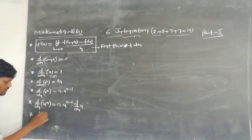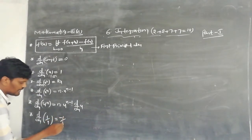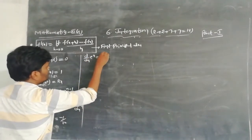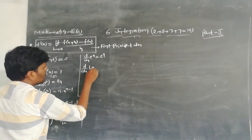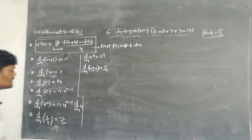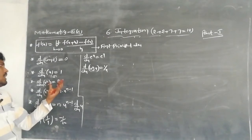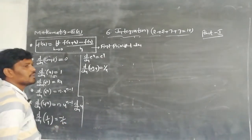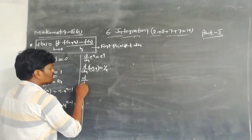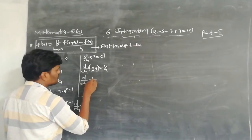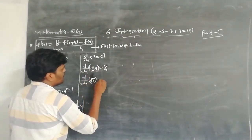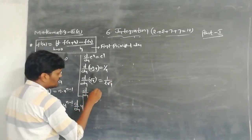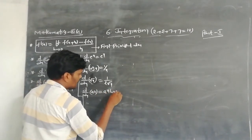Next, derivative of 1/x is equal to −1/x². Derivative of e^x is equal to e^x. Derivative of log x is equal to 1/x. These formulas were already learned in first year mathematics differentiation. Derivative of 1/√x is equal to 1/(2√x). Derivative of a^x is equal to a^x · log a (base e).